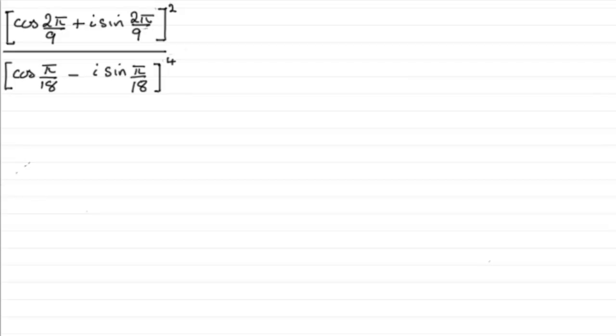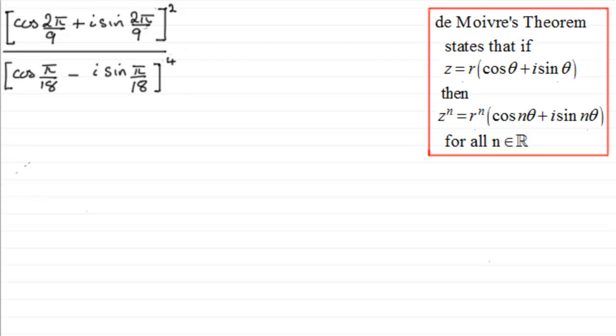Well first of all, I'm assuming then that you're familiar with De Moivre's Theorem. If not, it's here. Essentially De Moivre's Theorem states that if z equals r multiplied by cos θ plus i sine θ, then z to the power n equals r to the power n times cos nθ plus i sine nθ for all real powers.